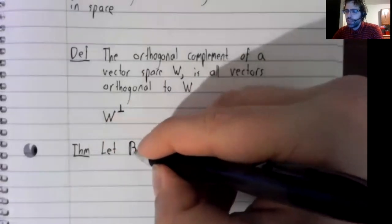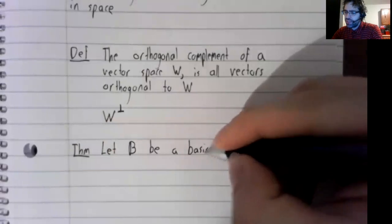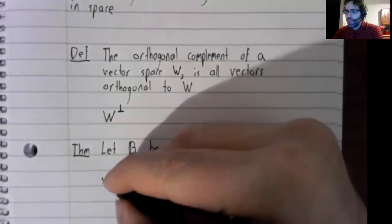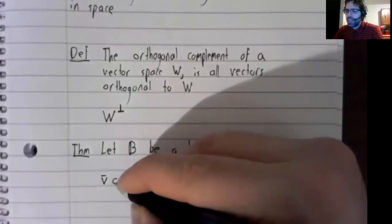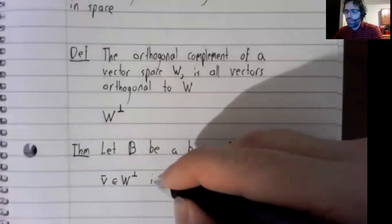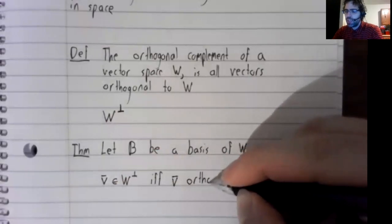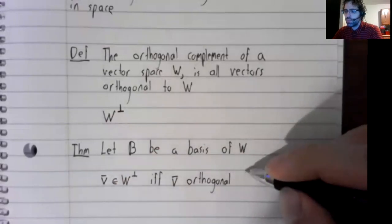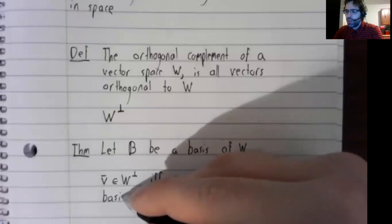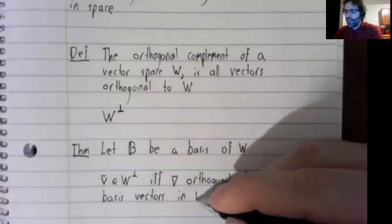Let B be a basis of W. Then a vector V is in the orthogonal complement of W if and only if it is orthogonal to all the basis vectors in the basis B.